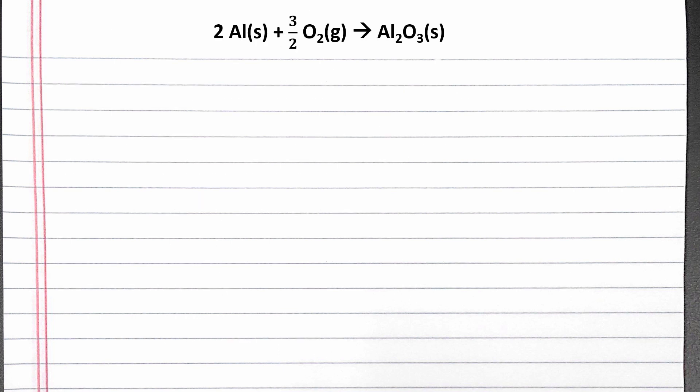In the Born-Haber cycle, we are applying Hess's law. We need to add together multiple reaction steps to form this standard enthalpy of formation equation.